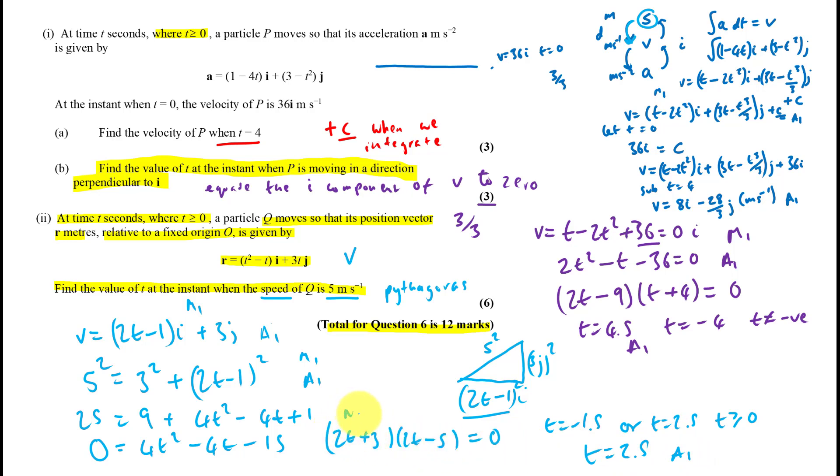So that's another accuracy answer mark here. That's another method mark here. So that's actually a straightforward 6 out of 6. So we should all be getting 12 out of 12.